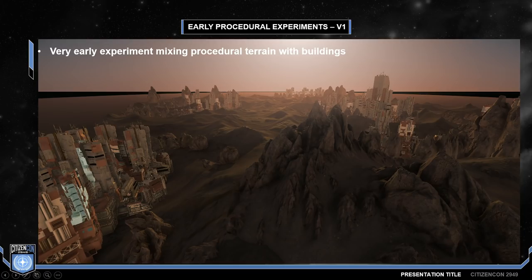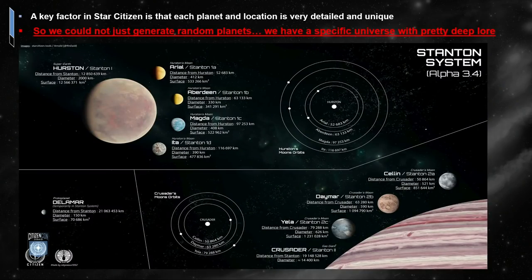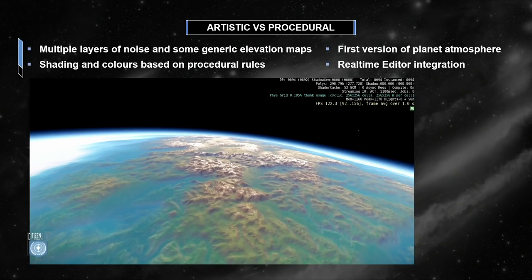Initially, I just started doing some tests mixing procedural terrain with buildings. Here is another early picture showing procedural terrain with no mountains. While we were getting some very interesting results during our early tests, a key factor in Star Citizen is that we have a specific universe with pretty deep lore, so we could not just generate random planets. We needed artist input to match the reference and lore. So we had multiple layers of noise and some generic elevation maps. Shading and colors were based on procedural rules, elevation and slope. We had an initial editor integration with real-time editing of basic planet properties and atmosphere.